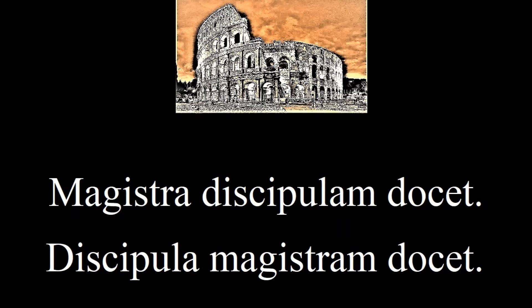This is where the verb customarily goes, but actually word order is pretty flexible in Latin. Since the subject and object have different forms, we know that Discipula magistrum docet, and Magistrum discipula docet, and Discipula docet magistrum have the exact same meaning. The only difference is the emphasis, but that's a more advanced topic.